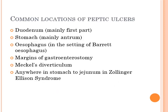Coming to the common locations of peptic ulcers: most commonly it is found in the first part of the duodenum, followed by the antrum of the stomach where you commonly get the H. pylori organism, then in the esophagus in the setting of Barrett's esophagus, at the margins of a gastroenterostomy, in Meckel's diverticulum, and anywhere in the stomach to jejunum in Zollinger-Ellison syndrome.